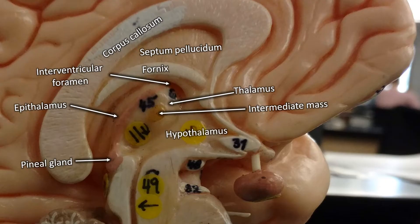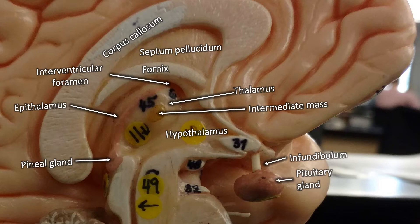If above the thalamus is the epithalamus, the region below the thalamus is the hypothalamus. Hanging off the hypothalamus there's a thin white stalk called the infundibulum, which is connected to the pituitary gland — that's how the hypothalamus is able to communicate with the pituitary gland.